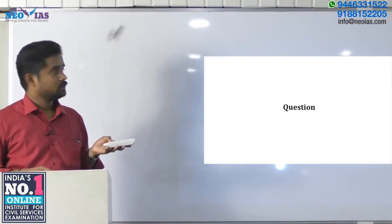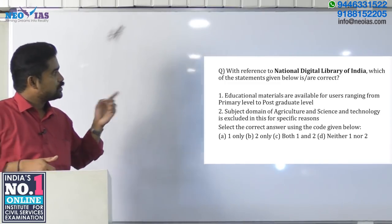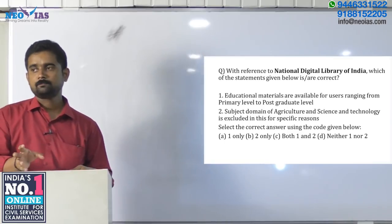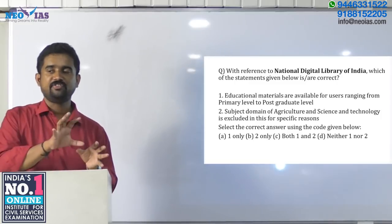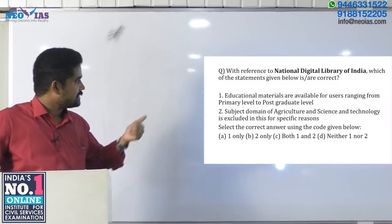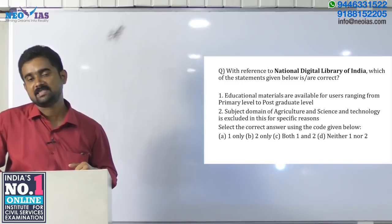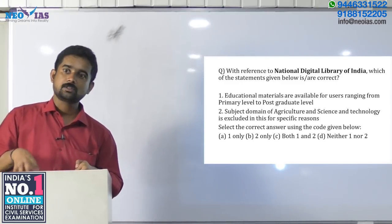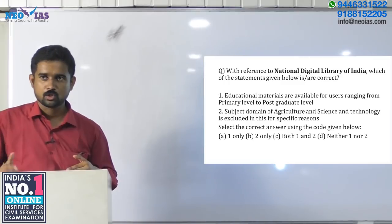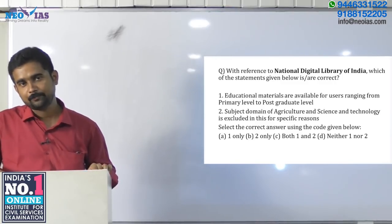Now a question based on this: With reference to National Digital Library of India, which of the statements is correct? Statement 1: Educational materials are available for users ranging from primary level to postgraduate level. Statement 2: Subject domains of agriculture and science and technology are excluded for specific reasons. Statement 1 is correct as the portal hosts materials from primary to postgraduate level. Statement 2 is wrong as agriculture and science and technology are included. The correct answer is option A — Statement 1 only.